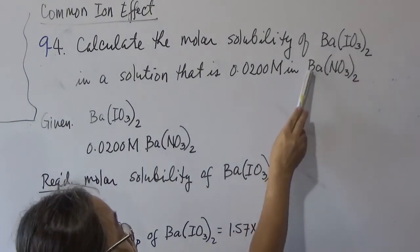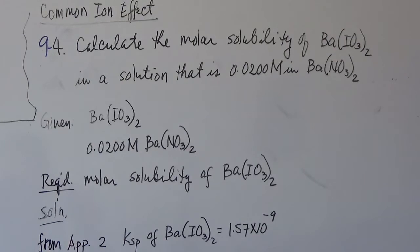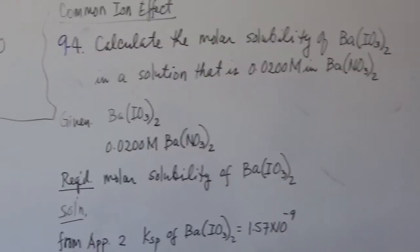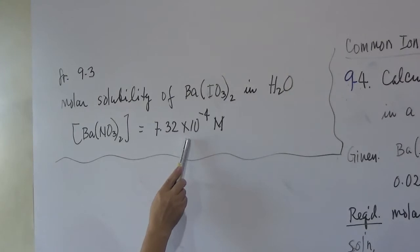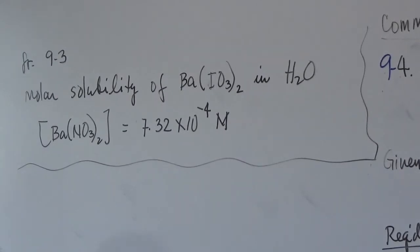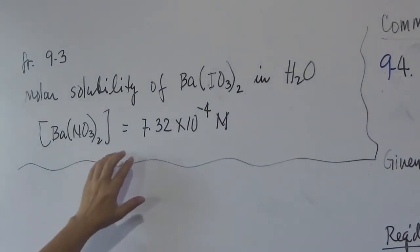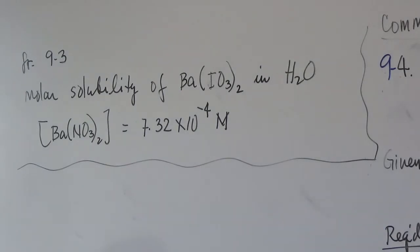There is a common ion which is barium, and the concentration of barium nitrate is 0.02 M. In problem 9.3, we found the molar solubility of barium iodate dissolved in water is 7.32 × 10⁻⁴ molar. After solving 9.4, we will compare the molar solubility in water versus in barium nitrate.